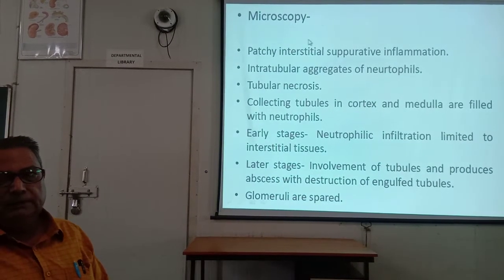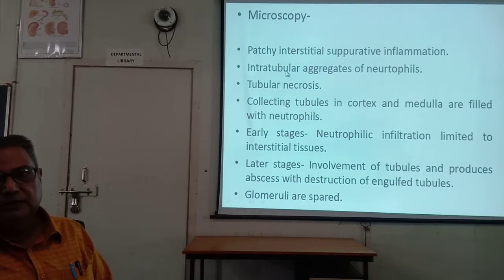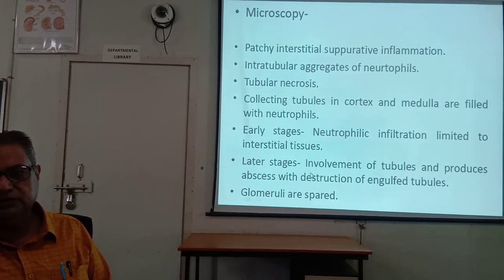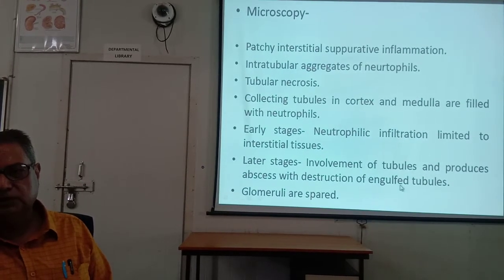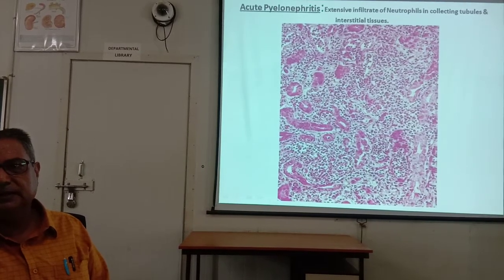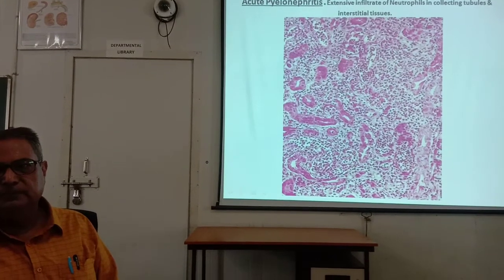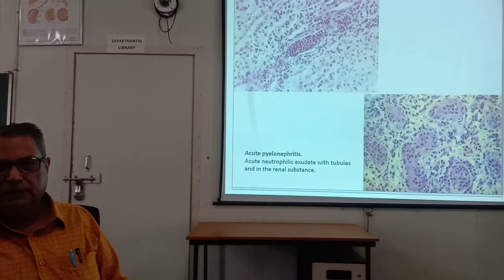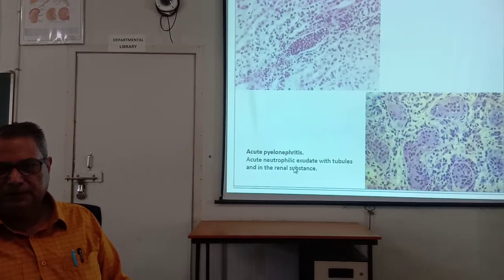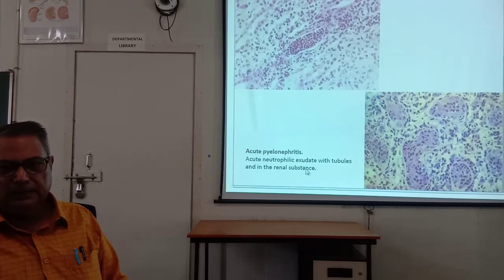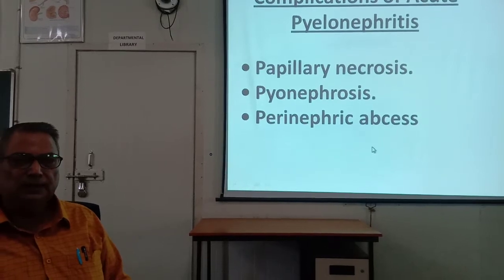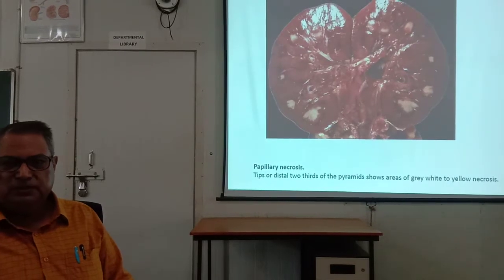Microscopically in acute pyelonephritis, there is patchy interstitial suppurative inflammation with intratubular aggregates of neutrophils and tubular necrosis. Collecting tubules in the cortex and medulla are filled with neutrophils. In early stages, neutrophilic infiltrates are limited to interstitial tissue; in later stages, involvement of tubules produces abscesses and destruction of engulfed tubules. Glomeruli are spared. Neutrophilic infiltrate is present in the collecting tubules as well as in the interstitium. Complications of acute pyelonephritis include papillary necrosis, pyonephrosis, and perinephric abscess.